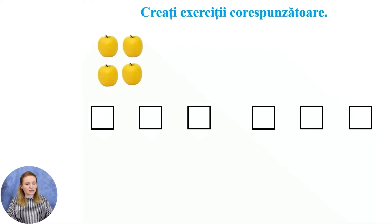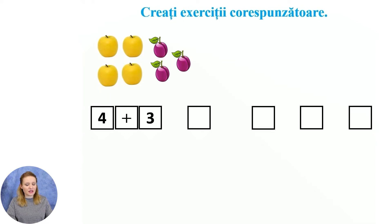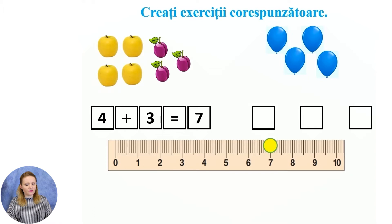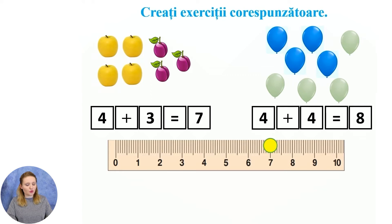Creați exerciții corespunzătoare imaginilor. Câte fructe sunt în total? Exercițiul corespunzător este 4 plus 3 este egal cu... Sunt sigură că știți răspunsul, dar vreau să verific cu ajutorul riglei. Pornesc de la 4, primul termen, și fac 3 salturi spre dreapta, unde numerele sunt mai mari. Deci 4 plus 3 este egal cu 7. Creați exercițiul prin care veți afla câte baloane sunt în total. 4 plus 4 este egal cu 8.